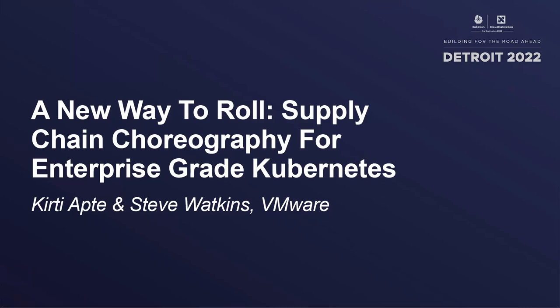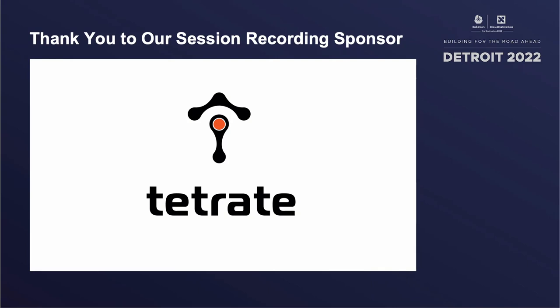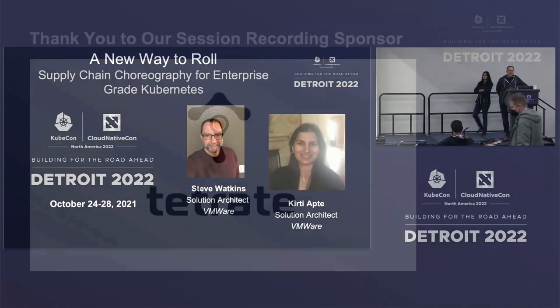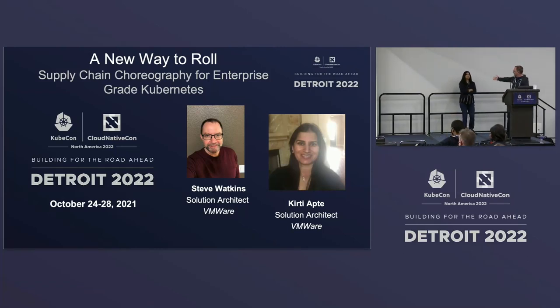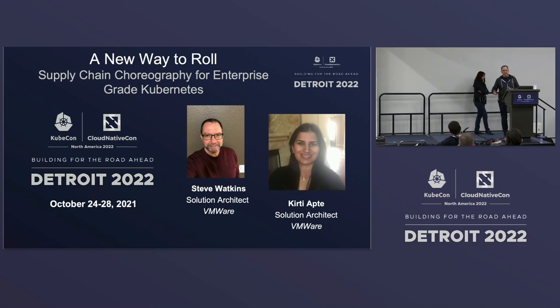Thank you everybody for coming and showing up today. Very happy that you made it this afternoon. This talk is called 'A New Way to Roll' — we're talking about supply chain choreography for enterprise Kubernetes. My name is Steve Watkins. This is my colleague Kirti Apte. We're both solution architects with VMware, with the Tanzu business unit, which means we work with all things modern apps and Kubernetes.